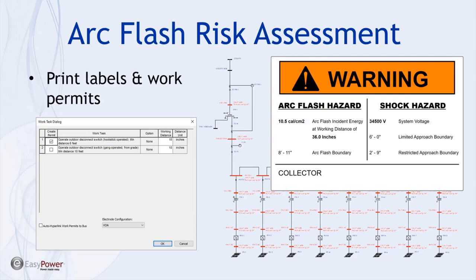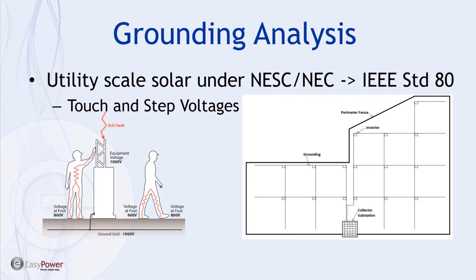We'll close today's discussion by spending a little time with utility-scale PV grounding analysis using the XGS Lab software. Utility-scale PV grounding typically falls under the NESC or NEC standards with some overlap depending on application; however, both refer to IEEE standard 80 for guidance on analyzing grounding systems. IEEE 80 provides methodologies for calculating step and touch voltage threshold values.